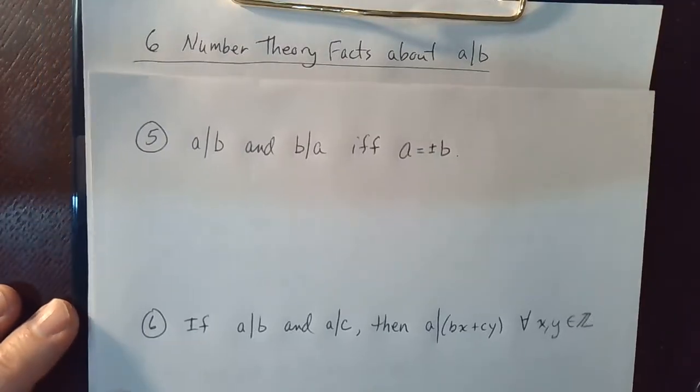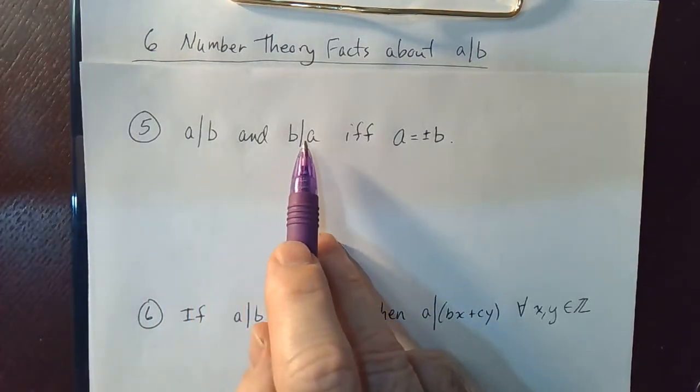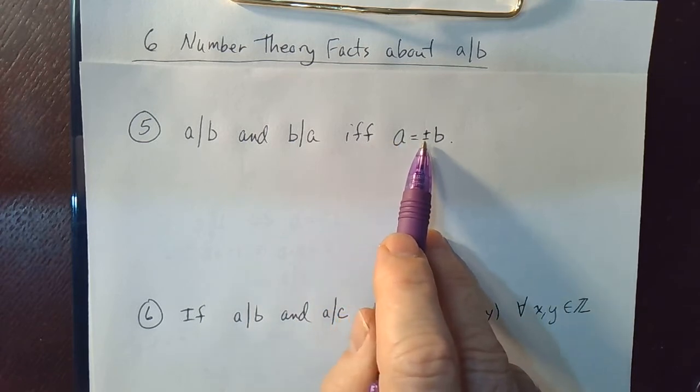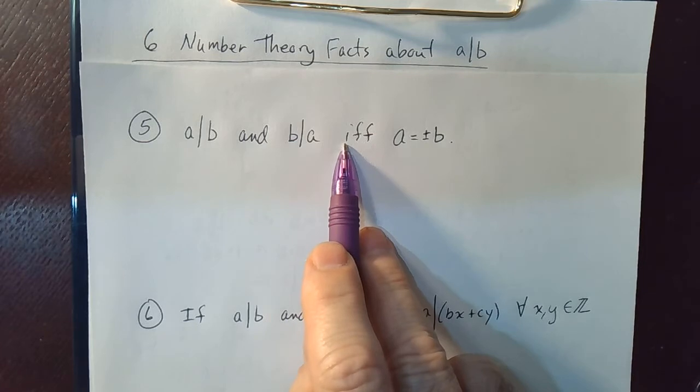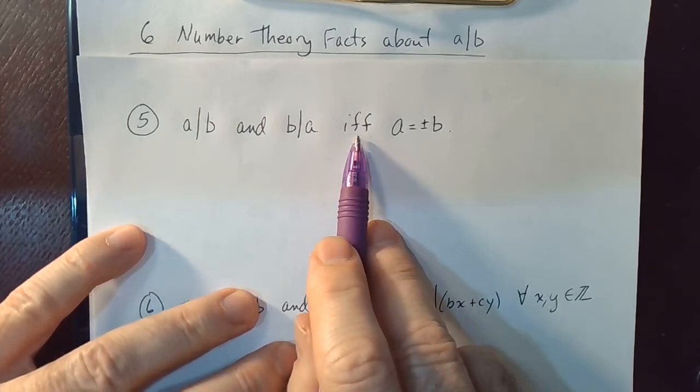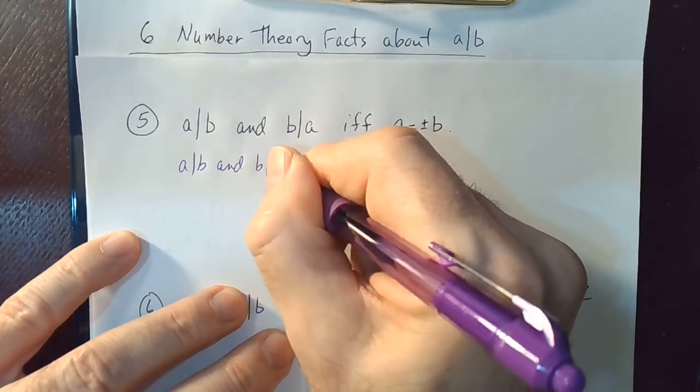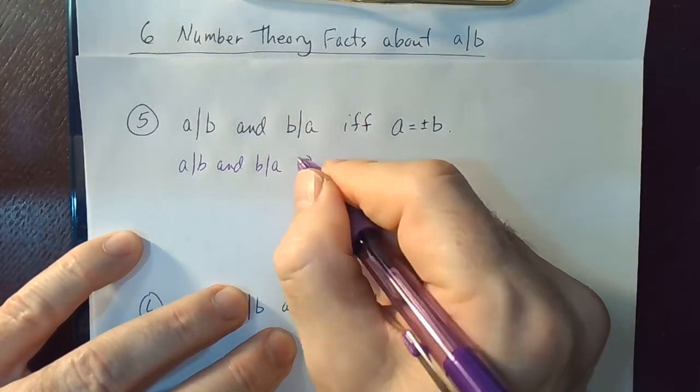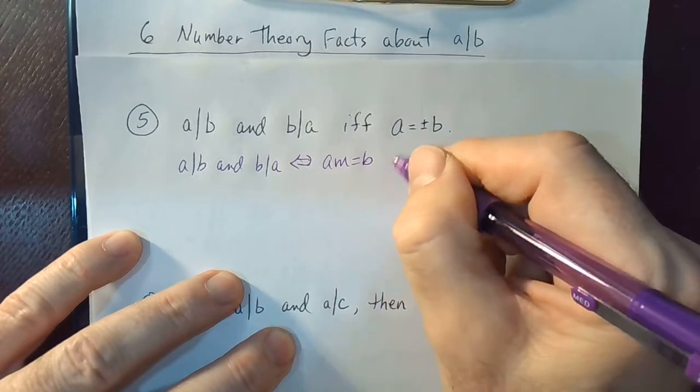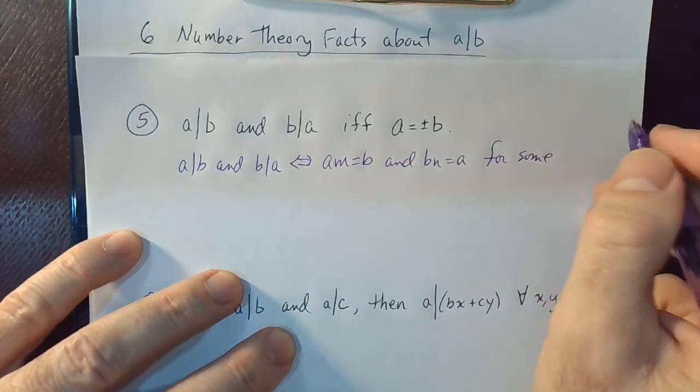Okay, so I've got a couple more to do. Number five says that if A divides B and B divides A, if we have that situation, we only have that situation when A is equal to either plus or minus B. This is an if and only if, so it's going to be a two-directional proof. Actually, I think I can do it without two directions. I think I can continue to use if and only if on every step. So A divides B and B divides A, if and only if, let's see, yeah, I'll use AM is equal to B and BN is equal to A for sum M and N in the set of integers.